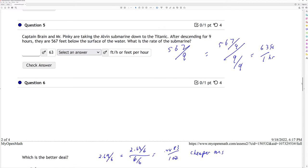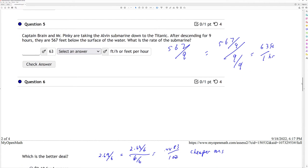Question 5. Captain Brain and Mr. Pinky are taking the Alvin submarine down to the Titanic. After descending for 9 hours, they are 567 feet below the surface of the water. What is the rate of the submarine? So you have 567 divided by 9. I divide the numerator and the denominator by 9. Rate of the descent per hour, I end up with 63 feet per hour.